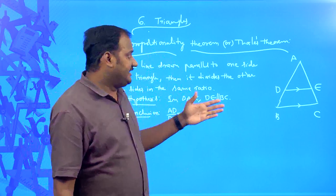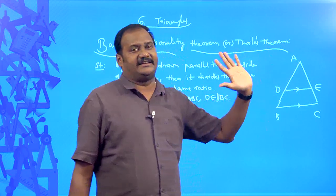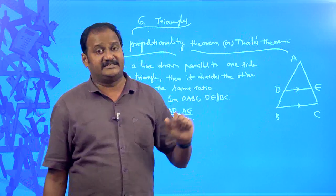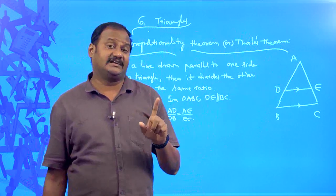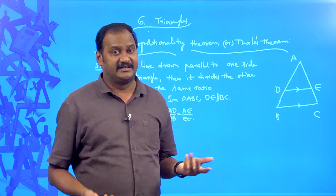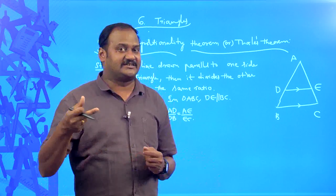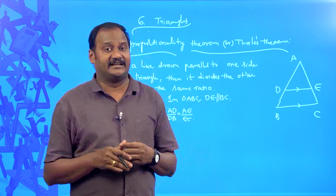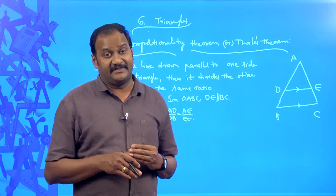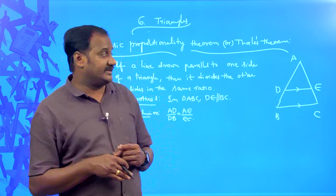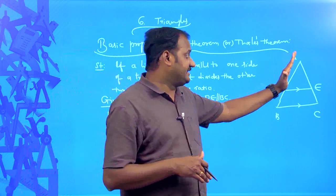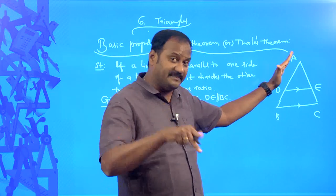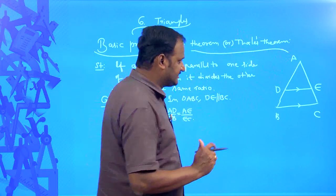I got one idea: AD/DB — I can take AD as the base of triangle ADE. If that is the base, then to calculate the area, what could be the height? There is no height, so that is why construction will come into picture. To find out the height of the triangle when the base is given, you will have to draw the corresponding altitude. If AD is the base, the altitude should be drawn onto that base.